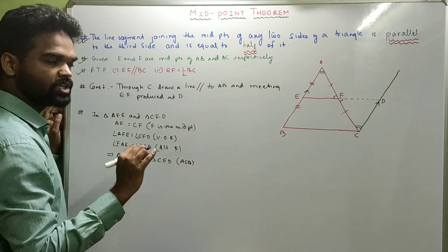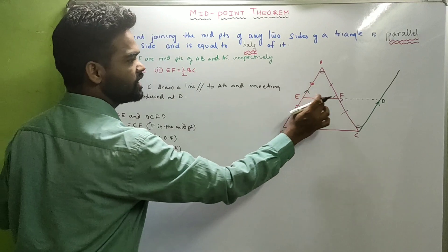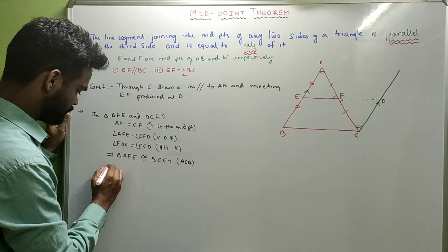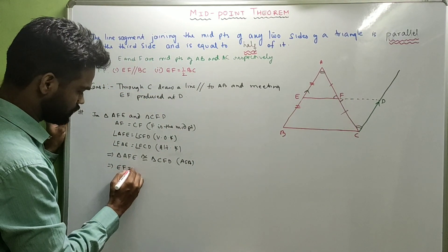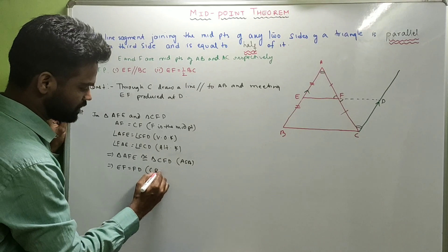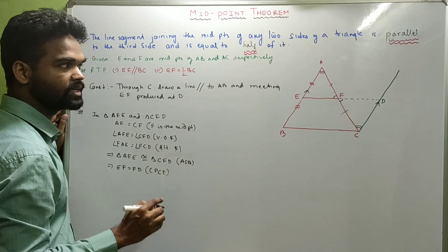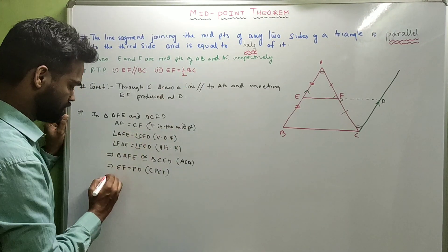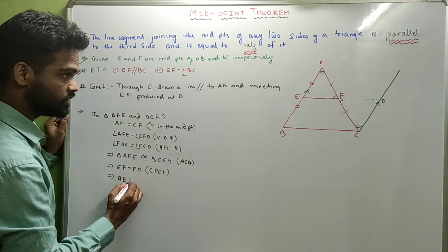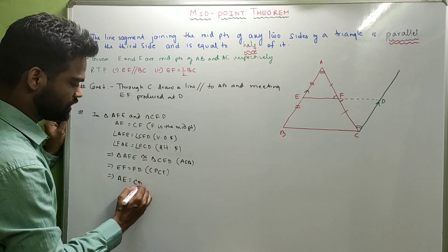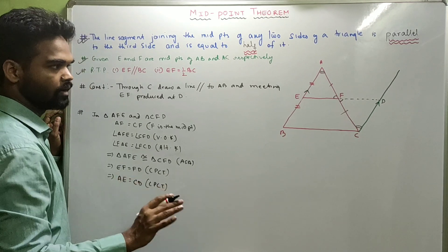Now if these two triangles are congruent, then EF equals FD — by CPCT (corresponding parts of congruent triangles are equal). Similarly, AE is equal to CD, by CPCT.